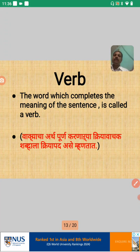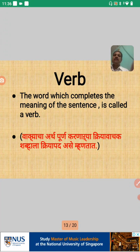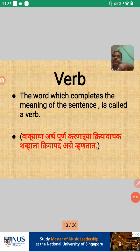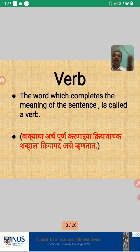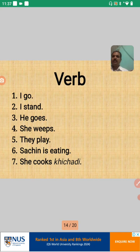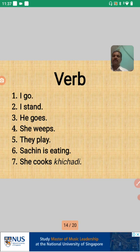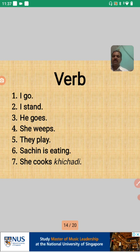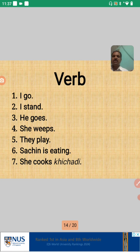Next is Verb. The word which completes the meaning of a sentence is called a verb. Here are some examples: I go, I stand, he goes, she sweeps, they play, Sachin is eating, and she cooks kichari. These are all examples of verbs in sentences.